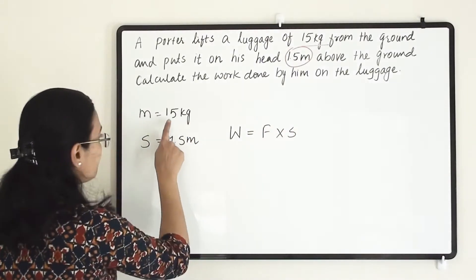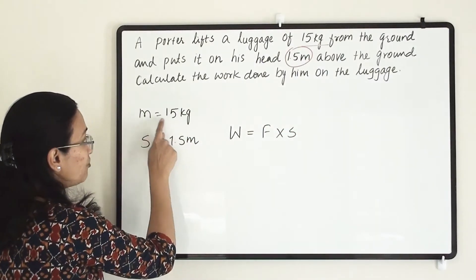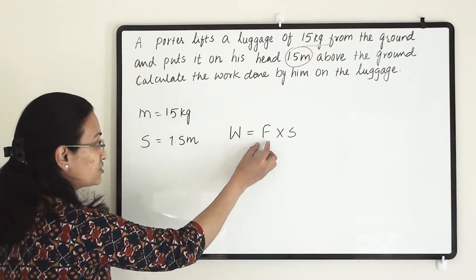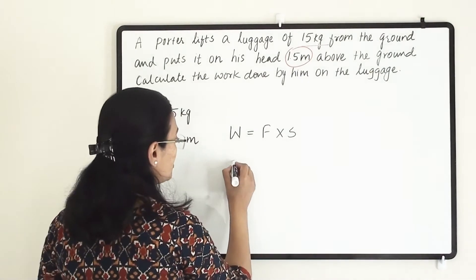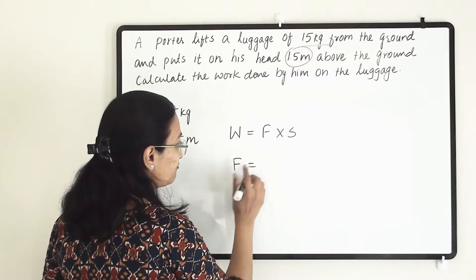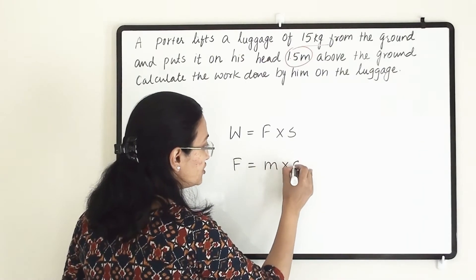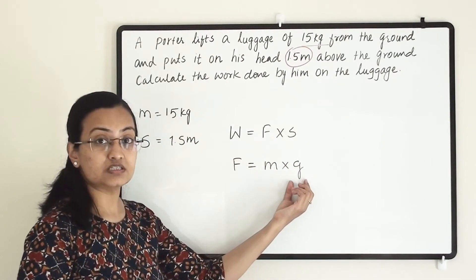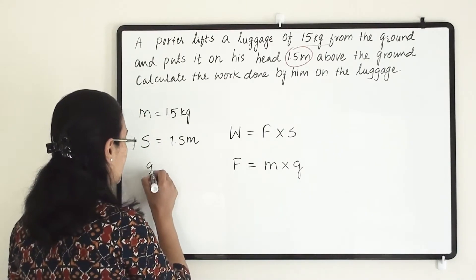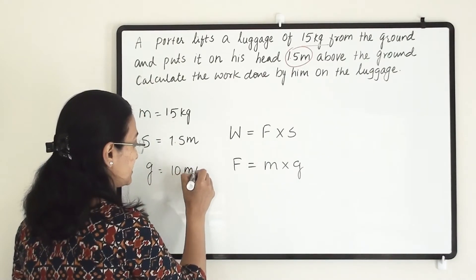We do not have force here, we have mass. So first we have to find out the force. And to find out the force we know that another formula is F equals to M into G. Here G is acceleration due to gravity. So G we are taking is 10 meter per second square.